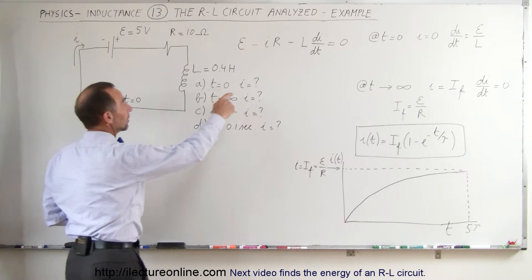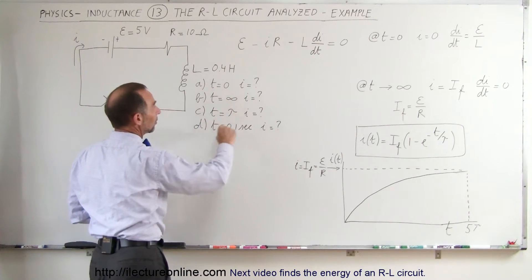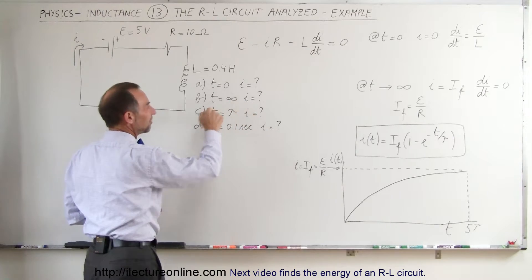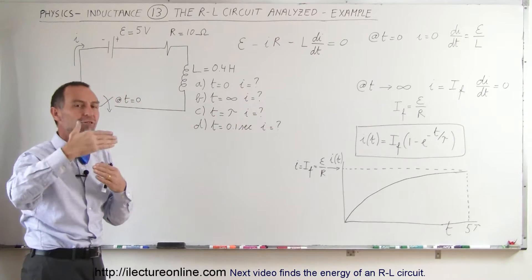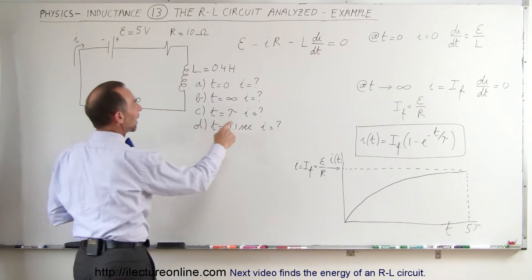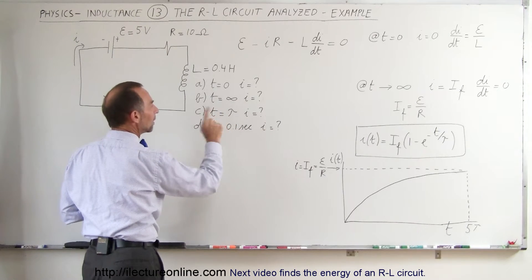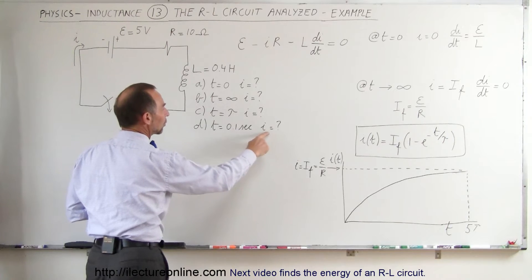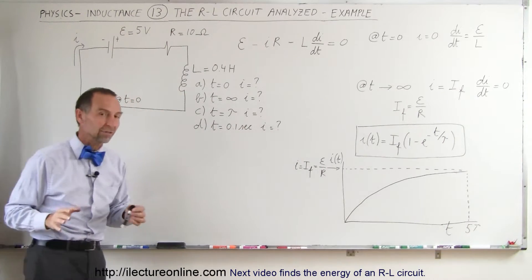And specifically, let's find the current when the time is equal to 0. Let's find the current when time is infinity, not really infinity, but after enough time has elapsed so we've reached steady state value. Let's find the current when t is equal to 1 time constant and let's find the current when time is equal to 0.1 seconds.